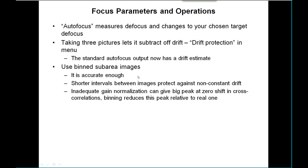The third point is more subtle but a common source of problems. If you don't have a good gain normalization, you have fixed pattern noise in all your images where all images have single pixels that are the same or vary by the same amount. When you cross-correlate those two images, this produces a big peak at exactly zero shift. Binning will reduce this peak relative to the real peak, which is a nicely rounded one not reduced by binning. There is some protection built into the program, but binning is another important component of that protection.